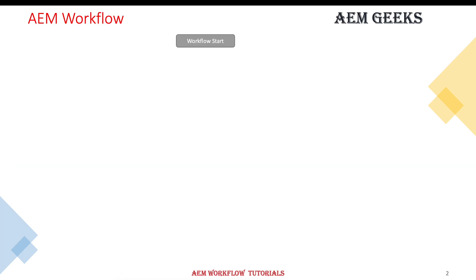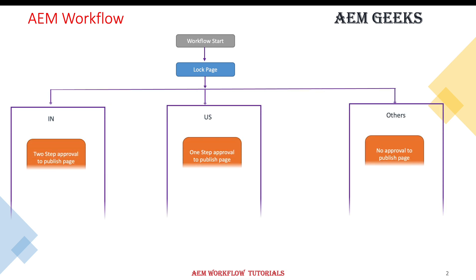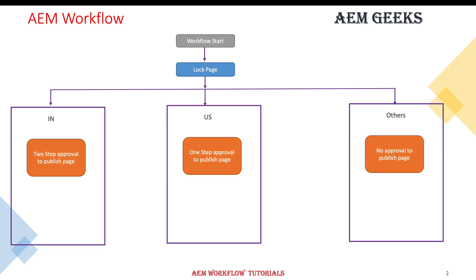So let's understand the use case first. This workflow will publish a page to the publish environment. As soon as this workflow starts, it will lock that page. The intention here is to explain how you should write the branches or split and the approval process. As a standard in our AEM Geek site, we have multiple country sites for India, US, and other countries. As soon as this workflow starts, the page will be locked and this item — the workflow item or the page — will be assigned to a particular person, which is the approver for the particular country.